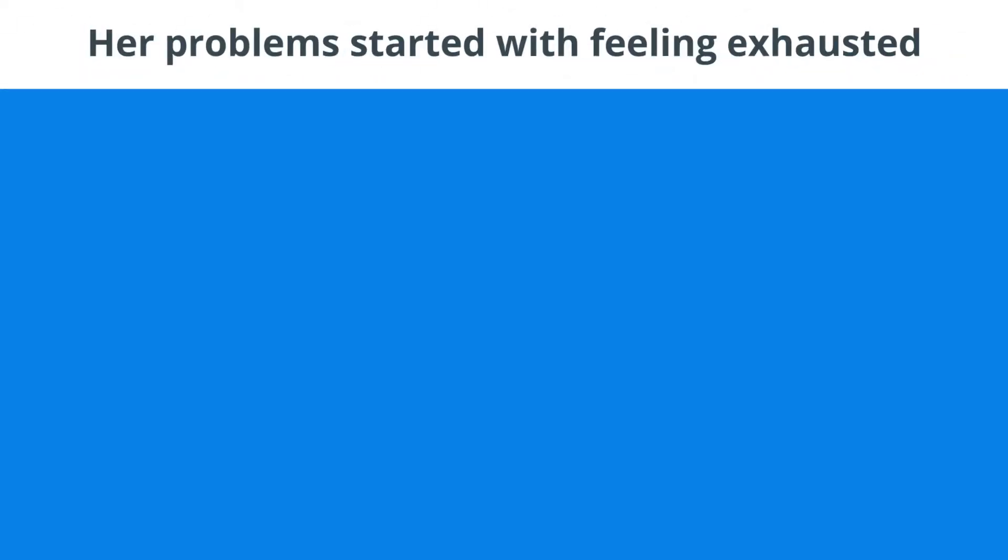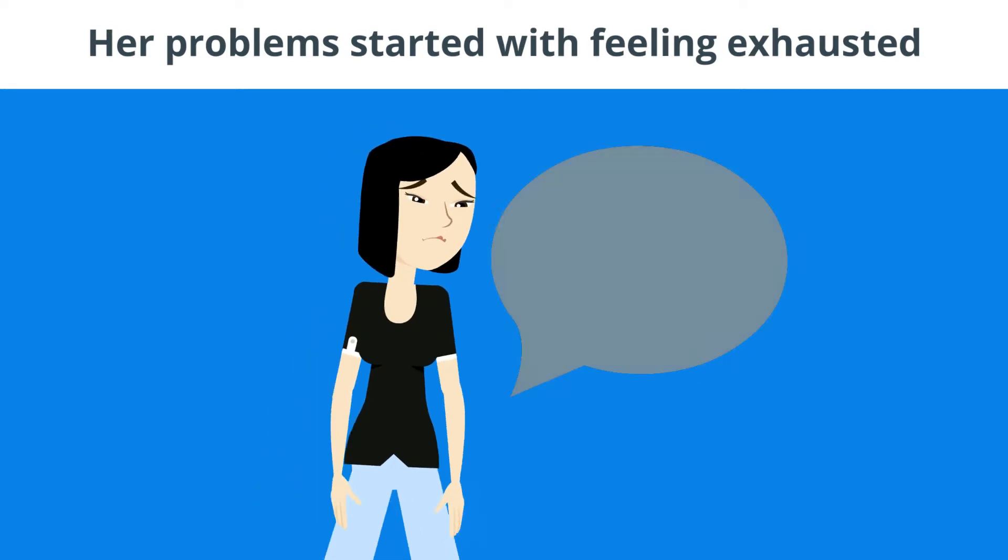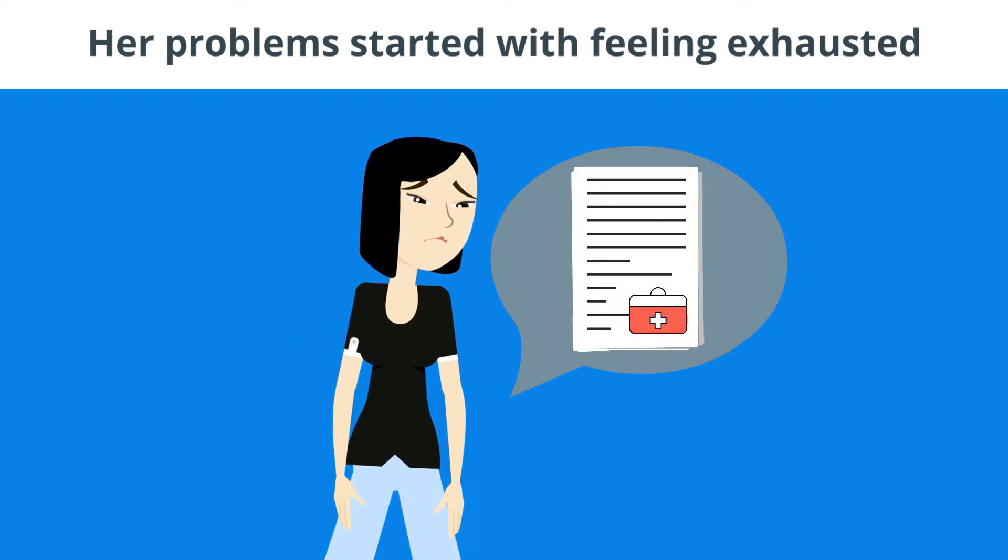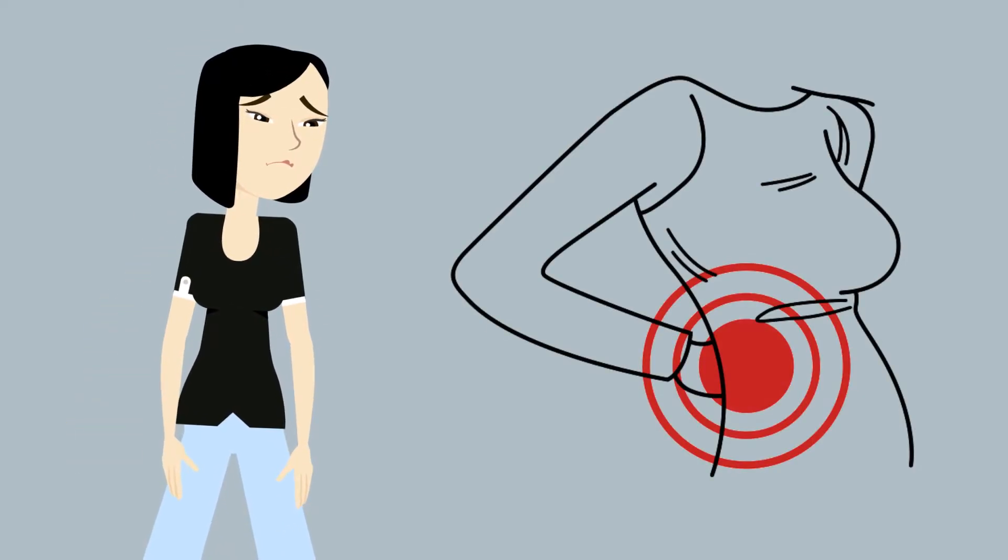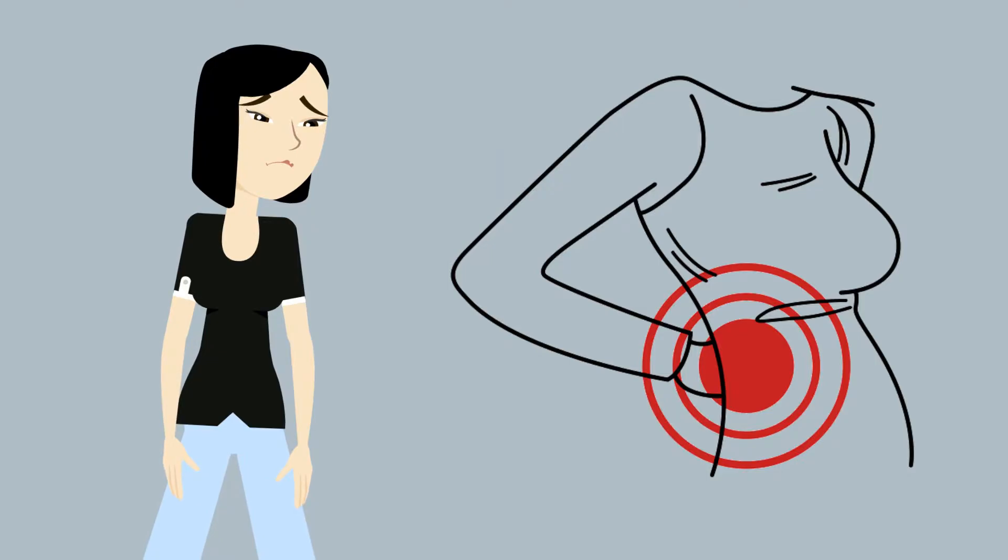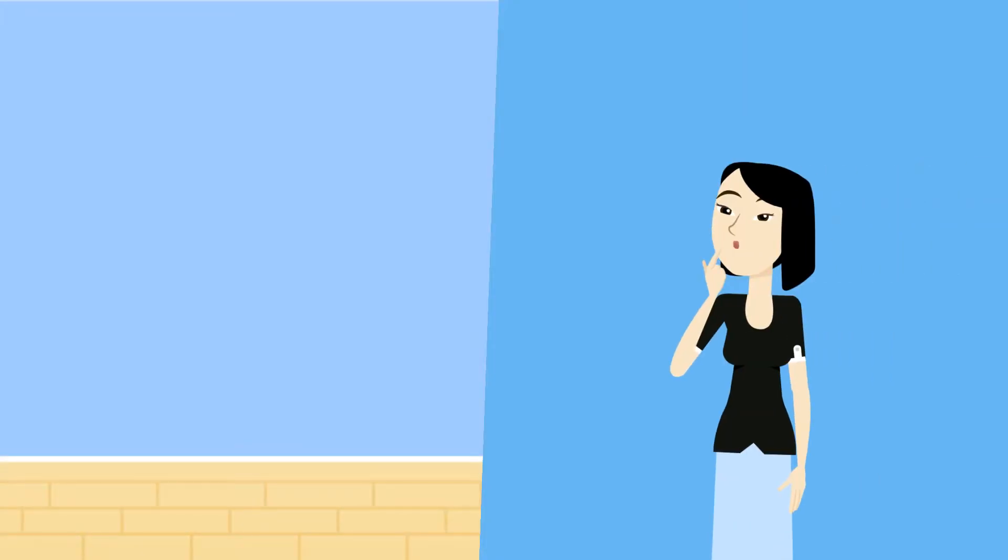Her problems started with feeling exhausted. She had blood work to check her iron and thyroid function, but everything came back normal. A few months after she started feeling tired, she developed a deep muscle ache in her arms and upper back. Now she knew for certain that something was wrong.